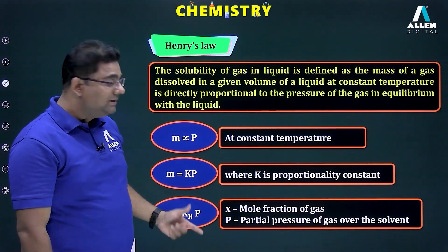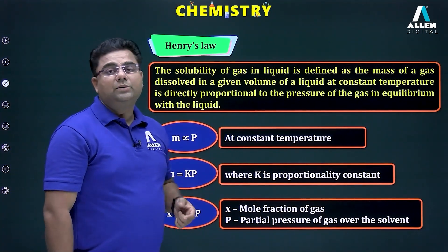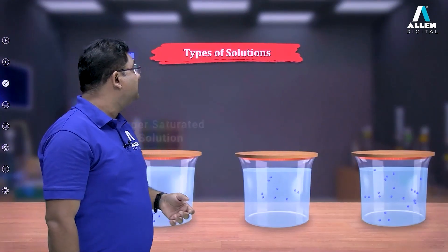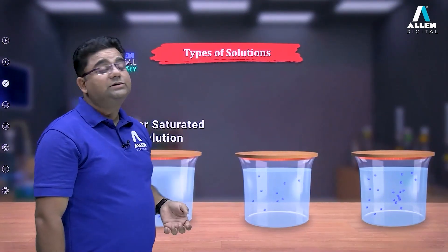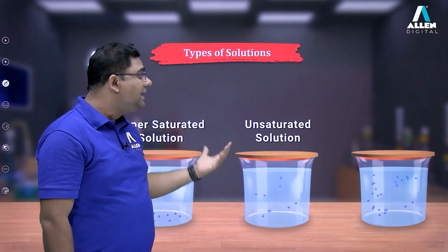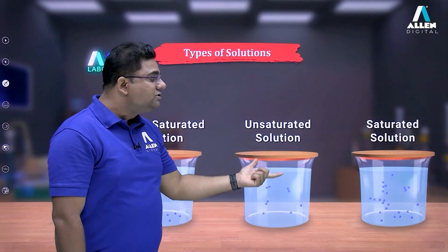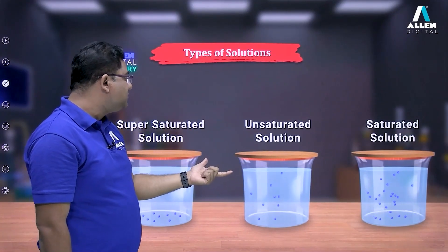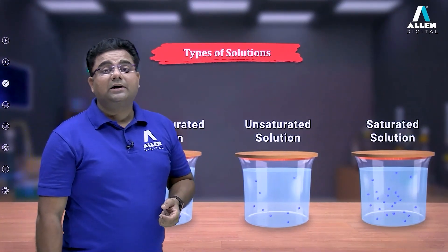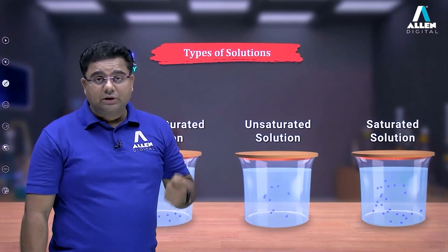You must learn the formula x = k_H × P related to Henry's Law. Next, we move on to the types of solution. There are three types: saturated solution, unsaturated solution, and supersaturated solution.